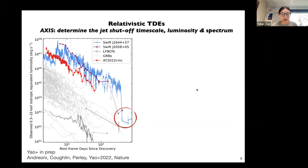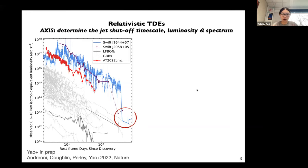For luminous fast blue optical transients, the QPO is at 200 hertz, so we will need millisecond timing precision. For tidal disruption events, the timing precision requirement is not as demanding, but we need the good time intervals to be longer in order to detect the long QPO timescales present in TDEs.